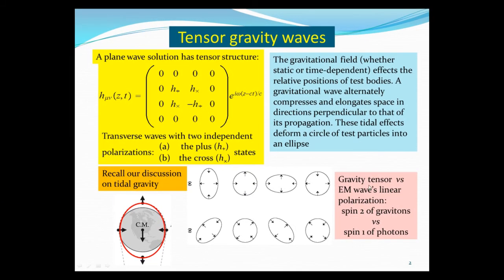This tensor wave corresponds to the fact that the graviton, the quantum for the gravitational wave, has spin two, while the electromagnetic wave photon has spin one. But in both cases, because they are massless particles with spin, polarization is always two.